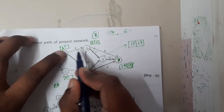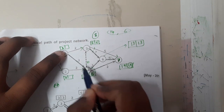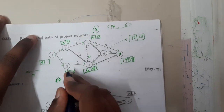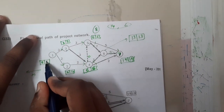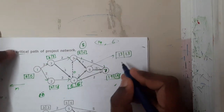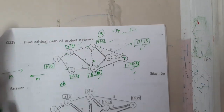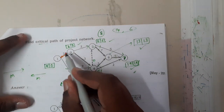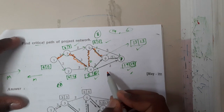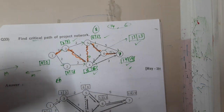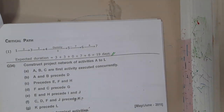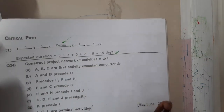Moving back further, both paths give six, so six minus two equals four and six minus three equals three; we select three. For another node with one path, six minus two equals four, and four minus two equals two. The starting node should always be zero. Now tick-mark all nodes where the forward and backward values are equal. All such nodes form the critical path, starting from the first node through to the last, giving a total cost of nineteen days.